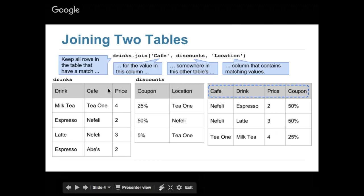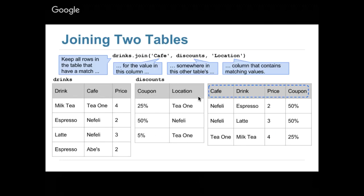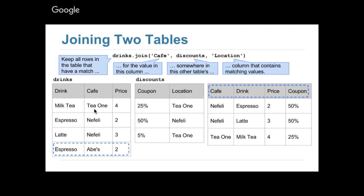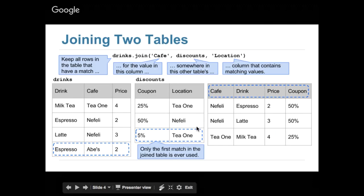At the Felly I get espresso with 50% off, latte with 50% off, and at T1 I get 25% off milk tea. The way join works is: keep all the rows in my table that have a match. I look at the cafe column and the location column, and keep only the rows that have a matching one. That's why Abe's is gone from the resulting table — no match, no join. Only the first match is used for a join.